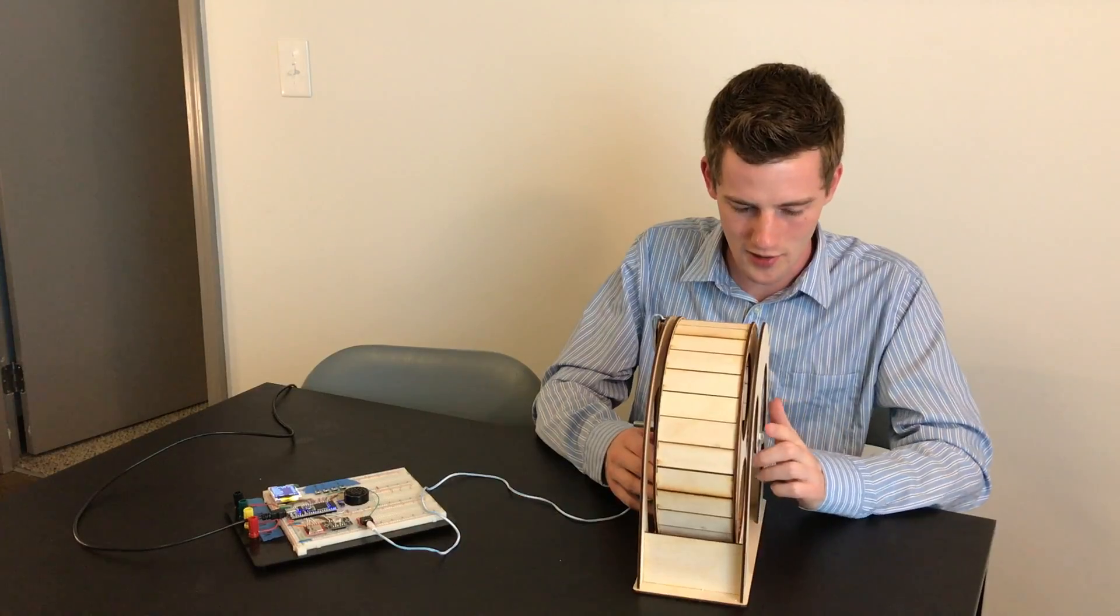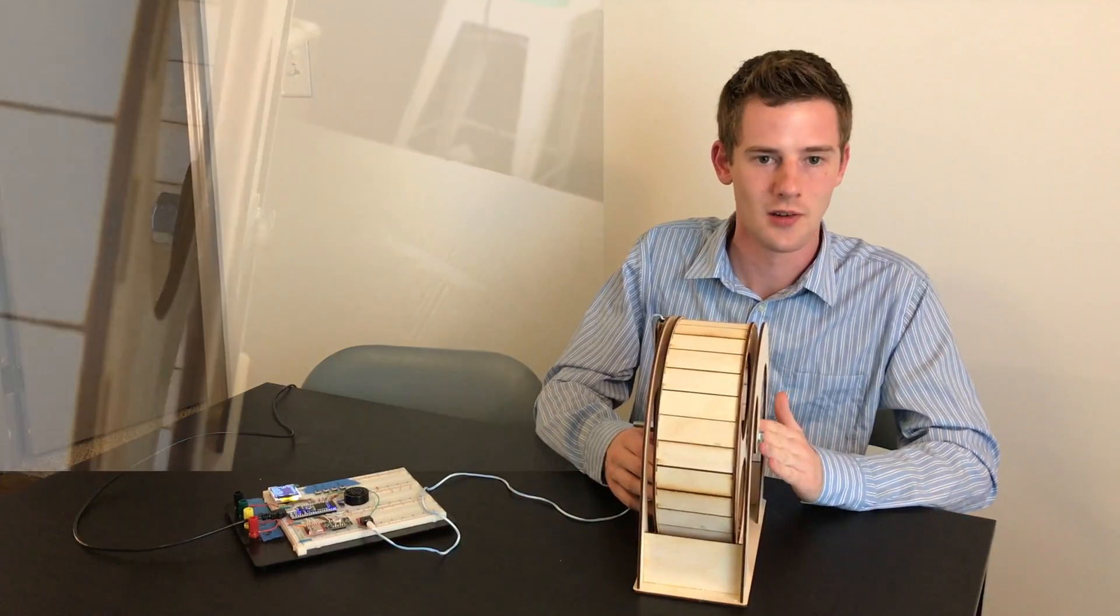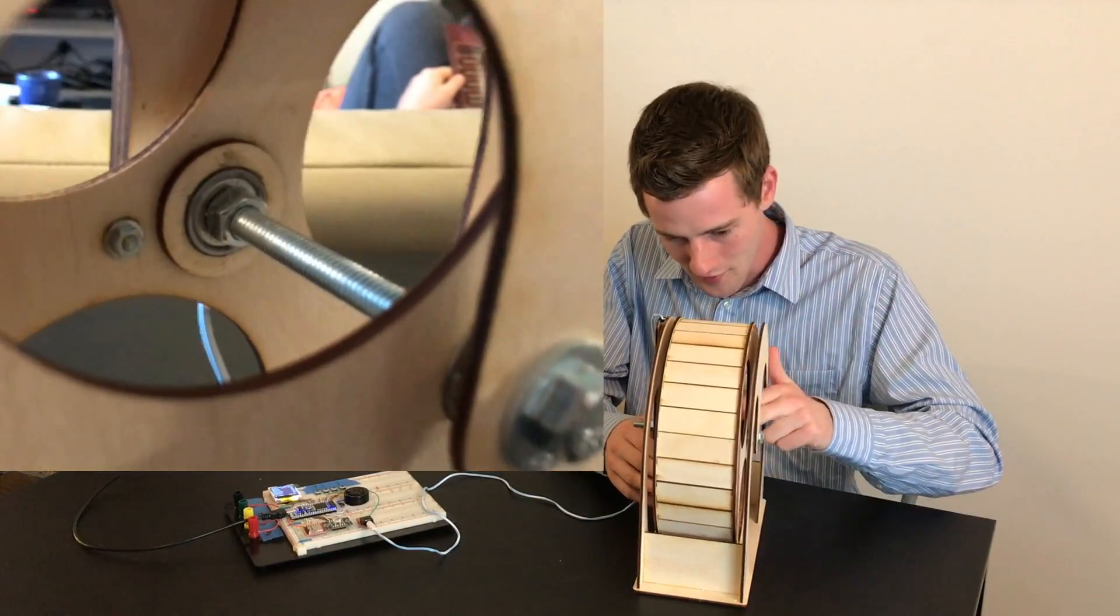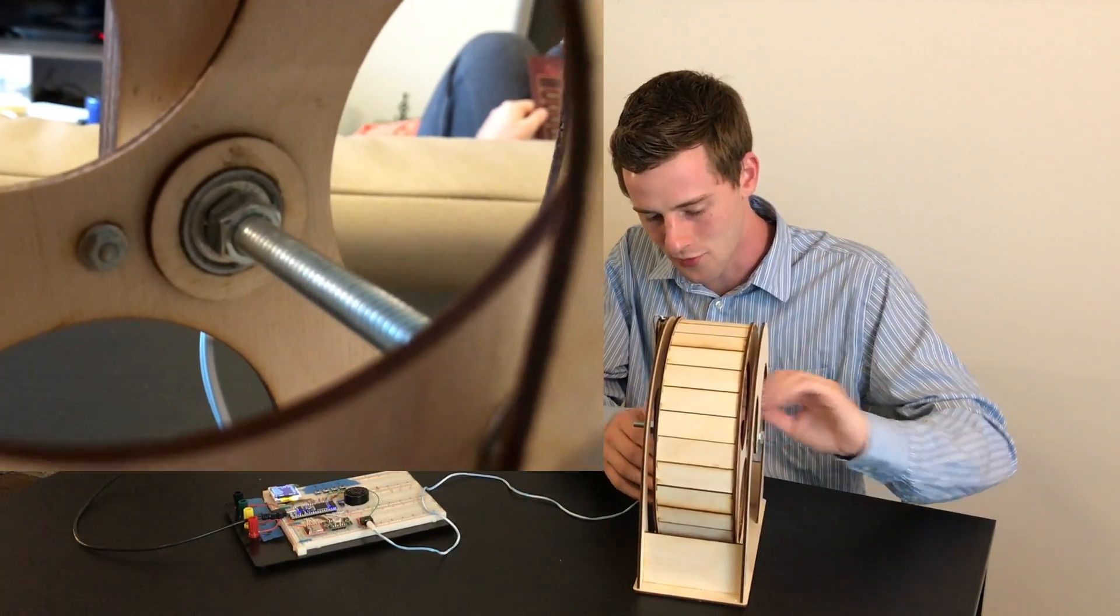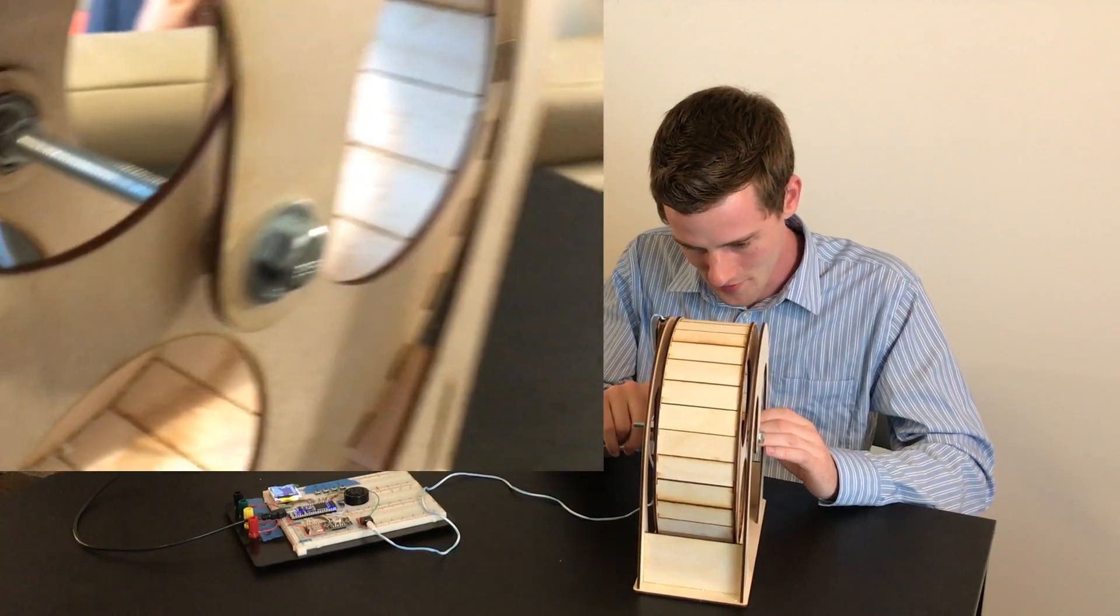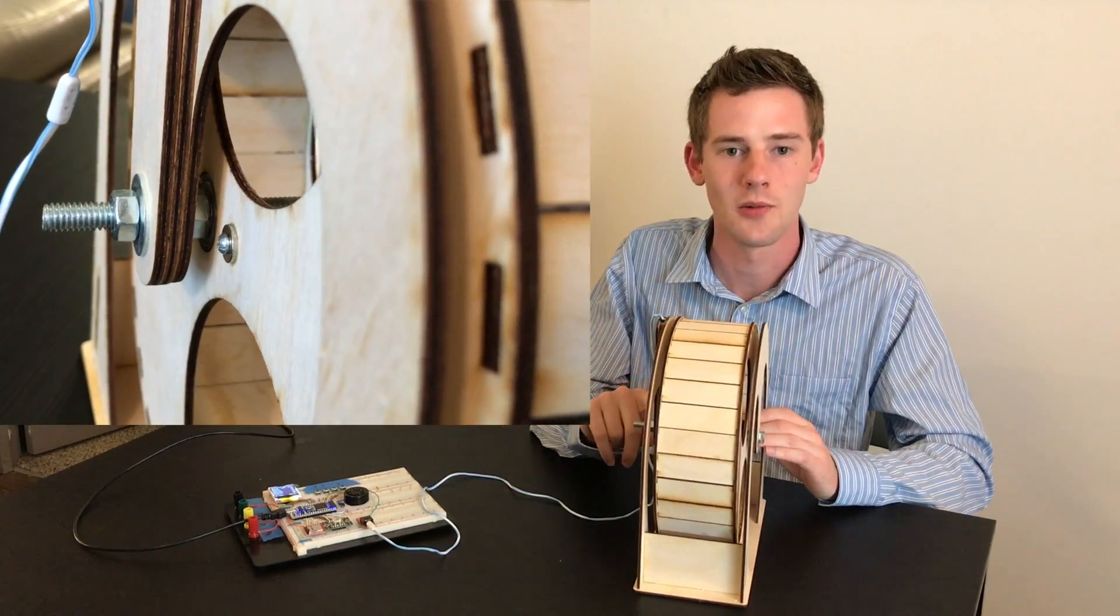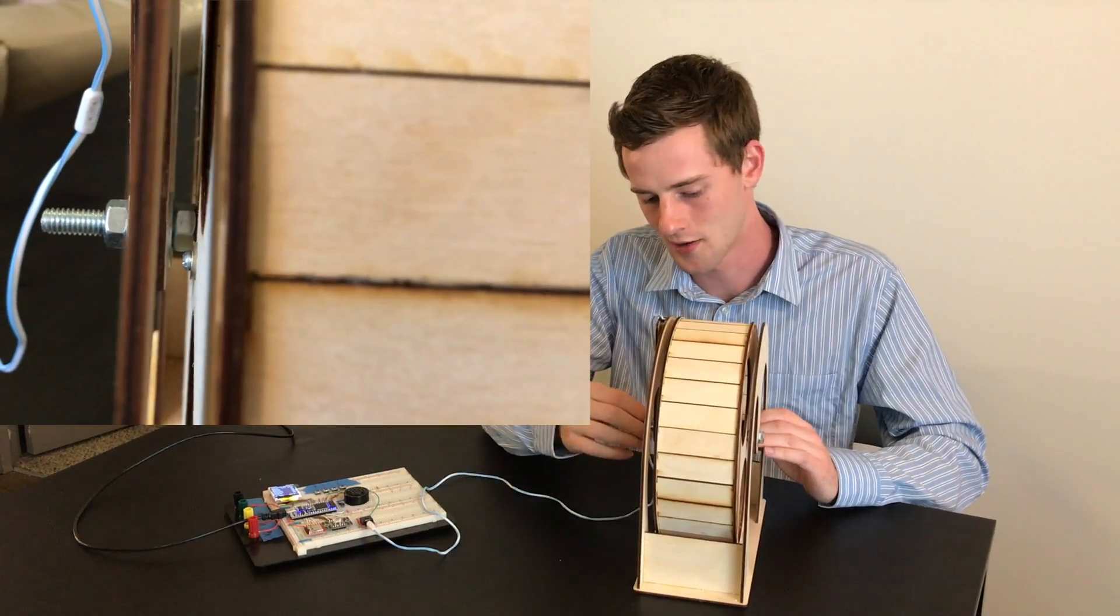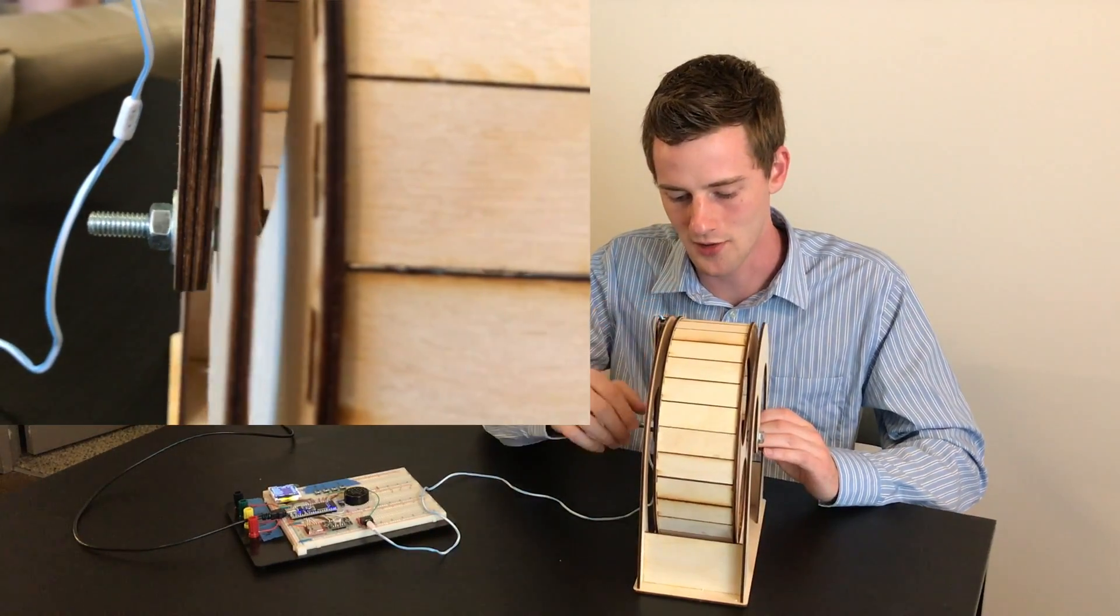So the order you're looking for is the bolt head, washer, wood, washer, nut, bearing, nut, some free space, another nut, bearing, nut, washer, these three wood pieces where the reed switch is located, another washer, finally the last nut.